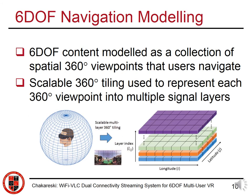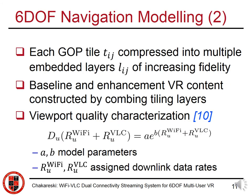We formulate the 6 degrees of freedom navigation as a collection of spatial 360-degree viewpoints that the users can select to explore or browse. We use scalable 360-degree tiling to represent each such viewpoint into multiple signal layers. We compress each GOP tile into multiple embedded layers of increasing fidelity, and the baseline and enhancement VR content streamed to the user is comprised by combining tiling layers. We also benefit from our earlier work providing formal characterization of the deliverable viewport quality based on the assigned downlink data rates to Wi-Fi and VLC.